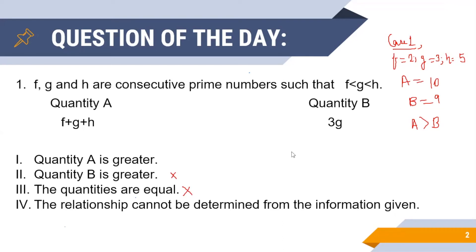Next we need to determine if A is always greater than B in all other cases for option 1 to be the correct option. To do this, let us assume f as the second lowest prime number that is 3.